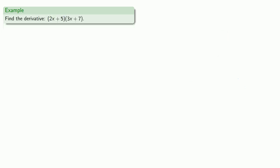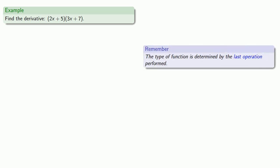Or how about the derivative of 2x plus 5 times 3x plus 7? So again, the type of function is determined by the last operation performed. And in this case, we are multiplying two things. So this is a product, but we don't yet know how to differentiate a product. But we can do some algebra.